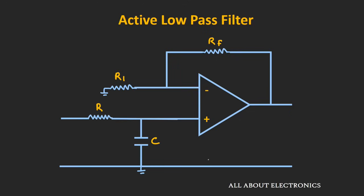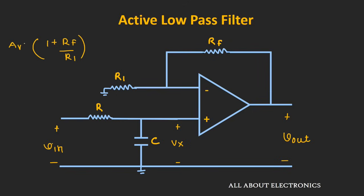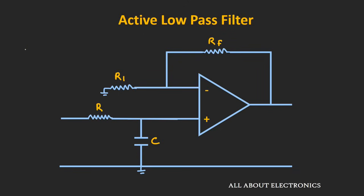The circuit will look like this — here will be the input to the filter and here we will take the output. The intermediate stage, which is the input to the non-inverting end, will be Vx. For the low frequencies, the gain provided by this op-amp will be 1 plus Rf by R1, which we denote as Av, the voltage gain. In this configuration, the cut-off frequency will be Fc equal to 1 divided by 2π times RC, which is the same expression as for the passive low-pass filter.